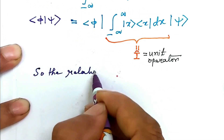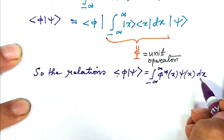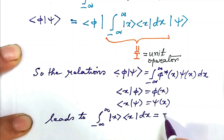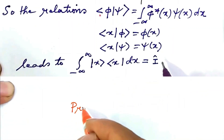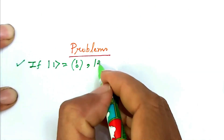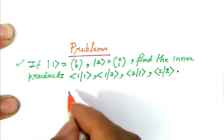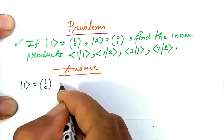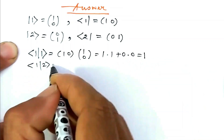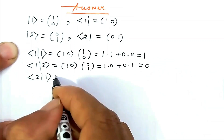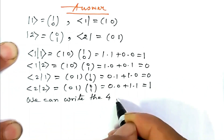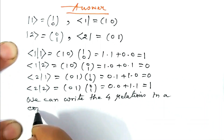We now do some problems. If ket 1 = (1, 0) and ket 2 = (0, 1), find the inner products. The answers are: bra 1 ket 1 = 1, bra 1 ket 2 = 0, bra 2 ket 1 = 0, bra 2 ket 2 = 1. We can write the four relations in a compact form.